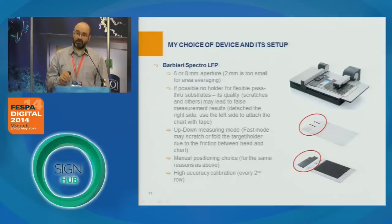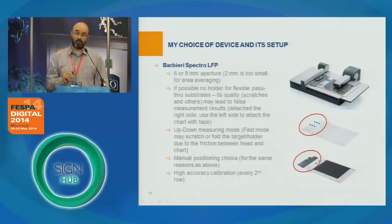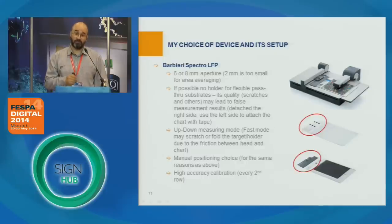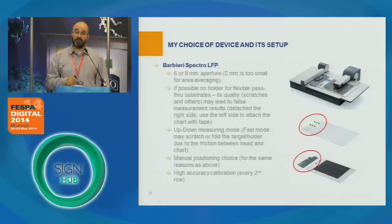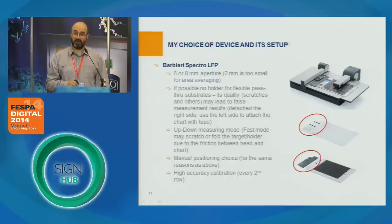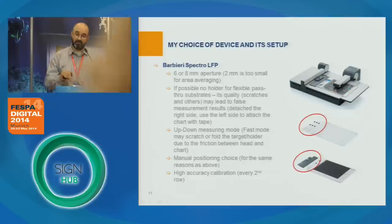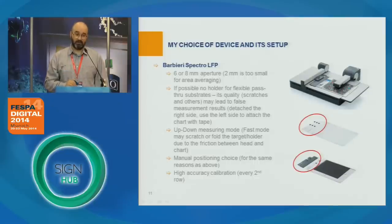Barbieri has a special holder for measuring transparent substrates. Unfortunately, due to the nature of the measurement, this holder gets scratched easily, and these scratches will influence the quality of the measurement. What I recommend is to cut and keep only the left side of the holder and attach the sample with scotch or self-adhesive tape. Also, instead of the fast mode measurement, I use the up-and-down measurement to avoid scratching — backlit film or transparent foil may get easily scratched by the measurement head if it moves in intimate contact with the measured area.